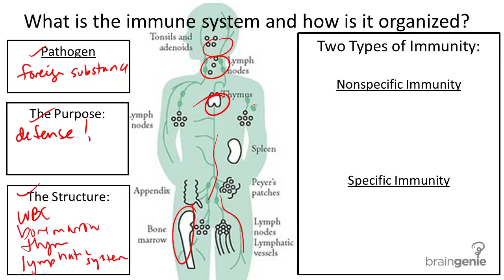There are two types of immunity, and the immune system simultaneously defends the body against pathogens using these two types.